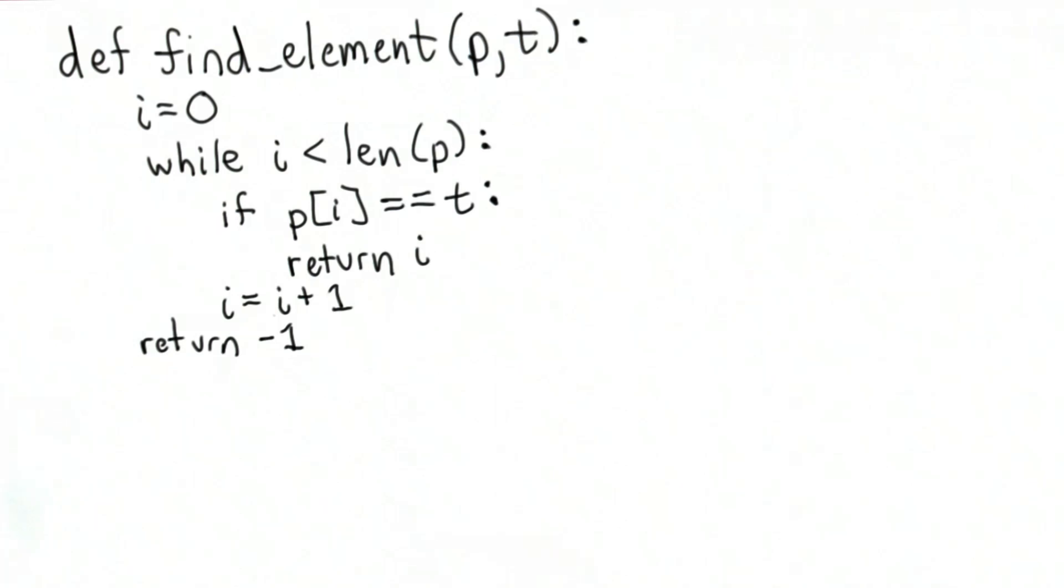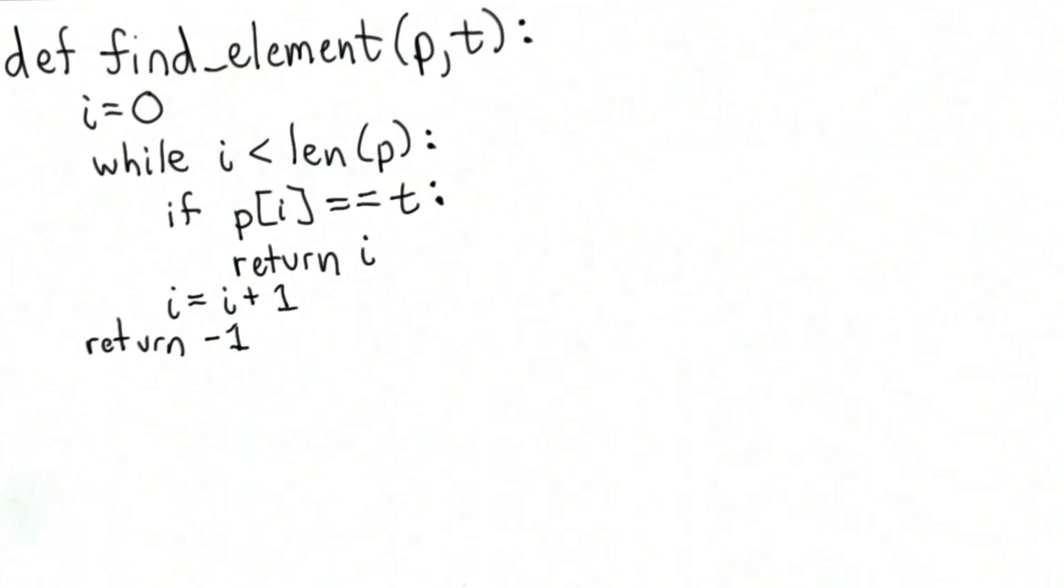I'll also show you a way to define it using a for loop. So the reason it's more natural to start thinking of defining find element with a while loop than a for loop is because the value that we want to return from find element is the index itself. When we use a for loop with the standard syntax of going through the elements of the loop, we don't keep track of the index. We just see each element in order.